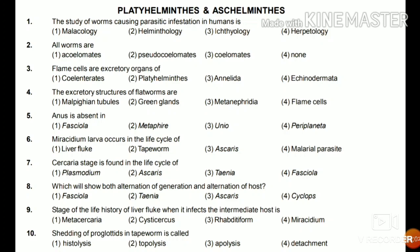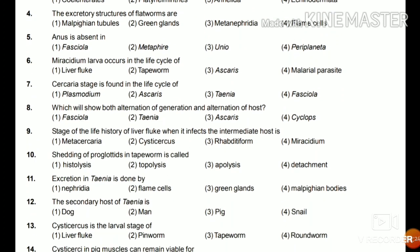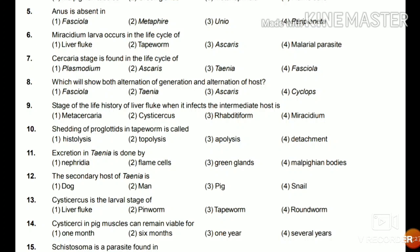The alternation of generation and alternation of host is shown by Fasciola, as it changes its generation and its host — the primary host and the secondary host. Question 9: The stage of the life history of liver fluke when it infects the intermediate host is metacercaria, cysticercus, rhabditiform, or miracidium? The answer is miracidium.